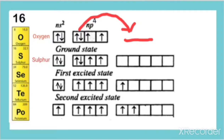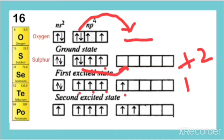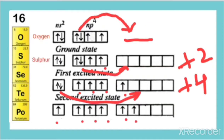In the case of Sulphur and other heavier elements, there is a vacant d-orbital. In the ground state there are 2 unpaired electrons, so it forms a +2 oxidation state. When one of the paired electrons gets excited to the vacant d-orbital, in the first excited state there are 4 unpaired electrons, so it shows a +4 oxidation state. When one more paired electron gets excited, it forms 6 unpaired electrons, giving a +6 oxidation state.